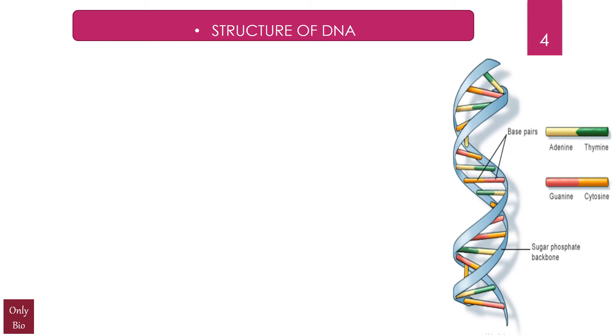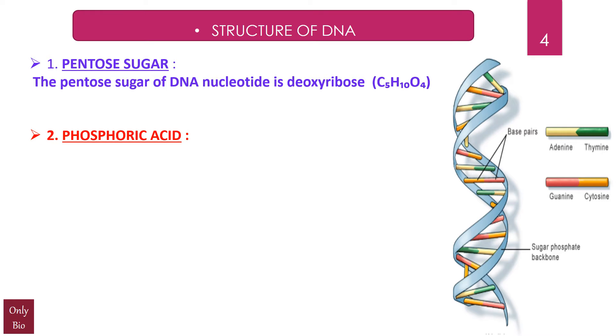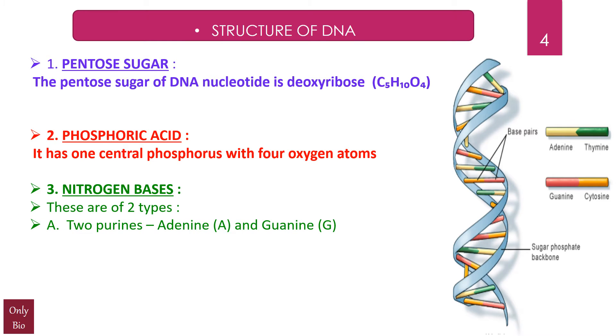On the right-hand side, you can see another picture of the DNA molecule. Let's start with the structure of DNA. The first unit being the pentose sugar. The pentose sugar of DNA nucleotide is deoxyribose, which is C5H10O4. Obviously, in case of RNA, the sugar that is present is ribose. Second is phosphoric acid—it has one central phosphorus with four oxygen atoms. Third, nitrogen bases—these are of two types: first, two purines, namely adenine and guanine, and second, two pyrimidines, namely cytosine and thymine.